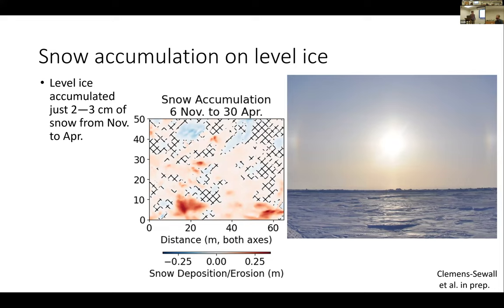I want to start with a little bit of a puzzle. What I'm showing in the center plot is a map of net snow deposition, in red, and erosion, in blue, on a patch of level second-year ice — about 50 meters by 65 meters. This is the net change from November 6th, 2019, to April 30th, 2020. This is a drifting ice floe in the Central Arctic on the Mosaic Expedition. By 'level ice,' I mean it's really flat.